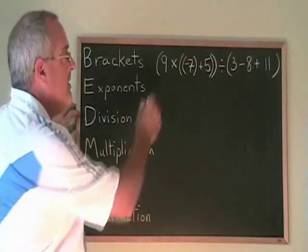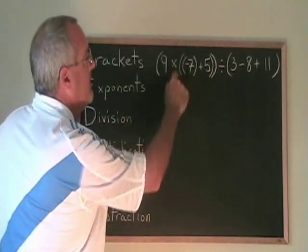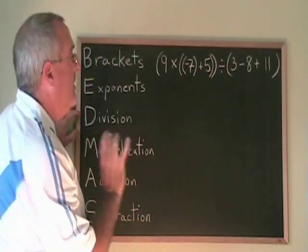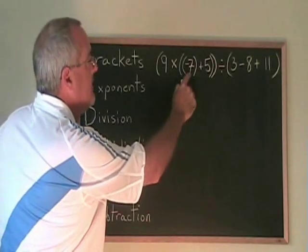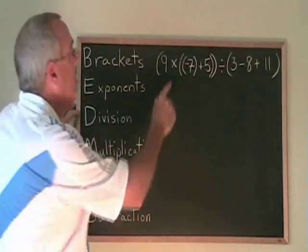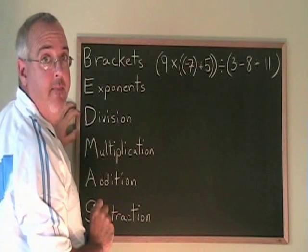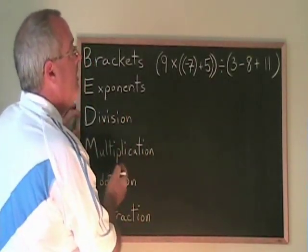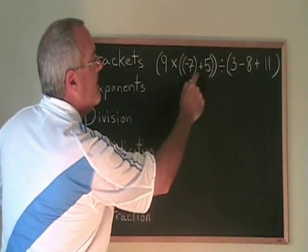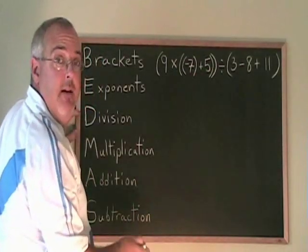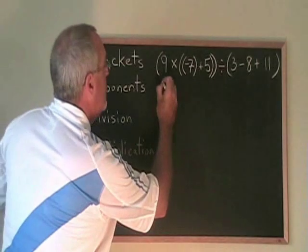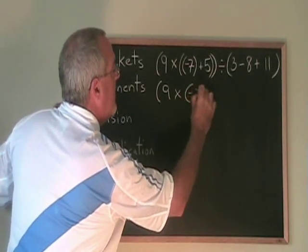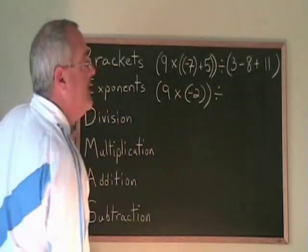But inside the big bracket, we have a smaller bracket that has negative 7 plus 5 in it. And just to make things a little bit more confusing, the negative 7 is in a bracket so that we can see the negative sign a little better. But reading it carefully, I see that the first operation I have to do is the innermost bracket here, negative 7 plus 5. And negative 7 plus 5 is negative 2. This becomes 9 times negative 2. And I copy the rest down.